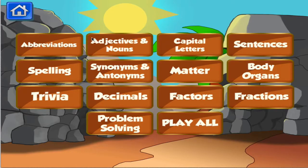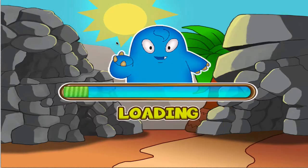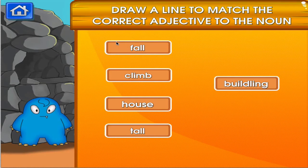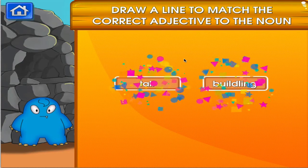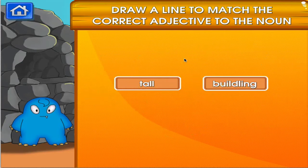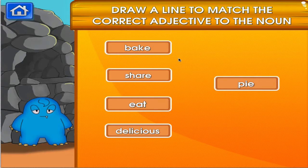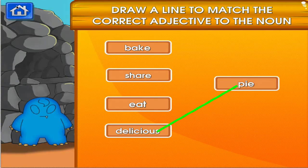Choose the activity you want to play. Adjectives and nouns. I can see you're getting better at this. You're good at this.